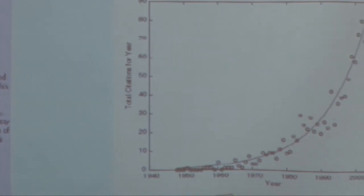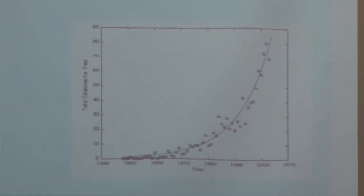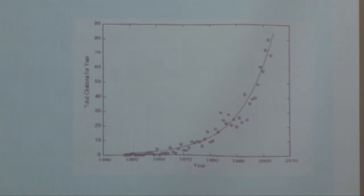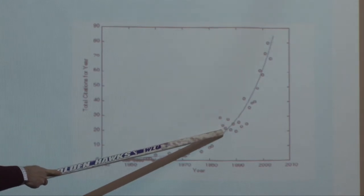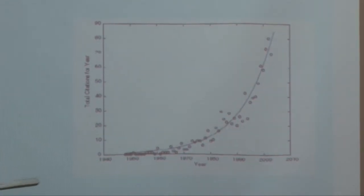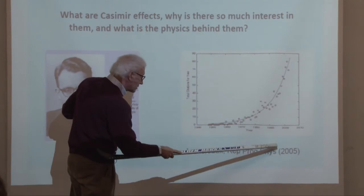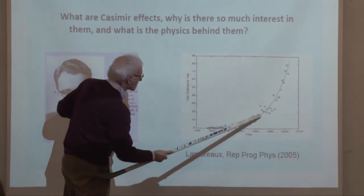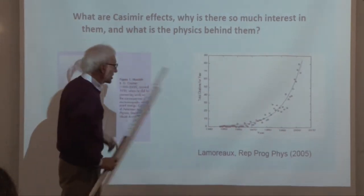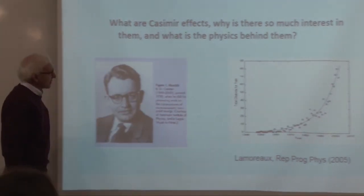He did this work in the late 40s. In 1994, when I wrote a book with two chapters on the Casimir effect, I made a plot showing growing interest in the effect — citations to a particular 1948 paper. My friend Steve Lamoureux, in a 2005 review, extended my graph. You can see interest has grown considerably, and by 2010 it continues this parabolic growth.